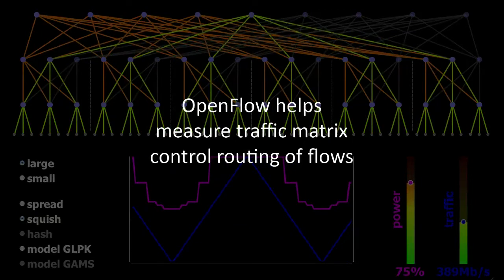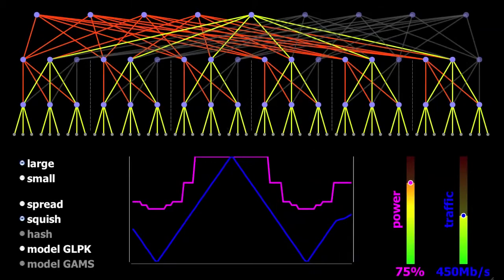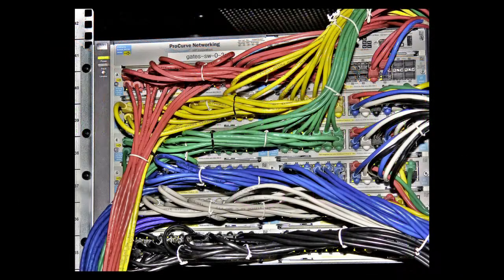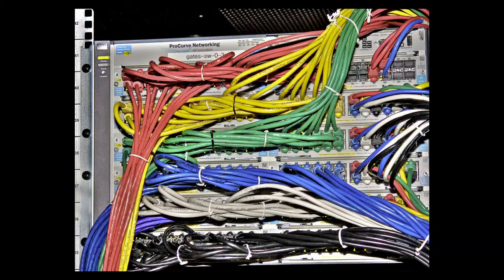It enables us to measure a traffic matrix as well as control the routing of flows. Both are required for a hardware prototype of Elastic Tree. The one shown here used 270 ports of Gigabit Ethernet to support a data center of 54 servers.